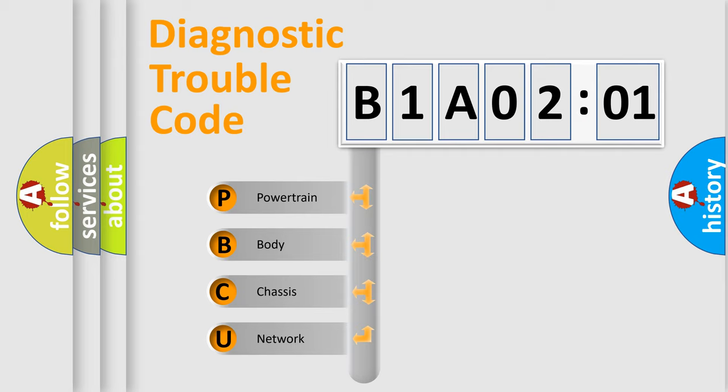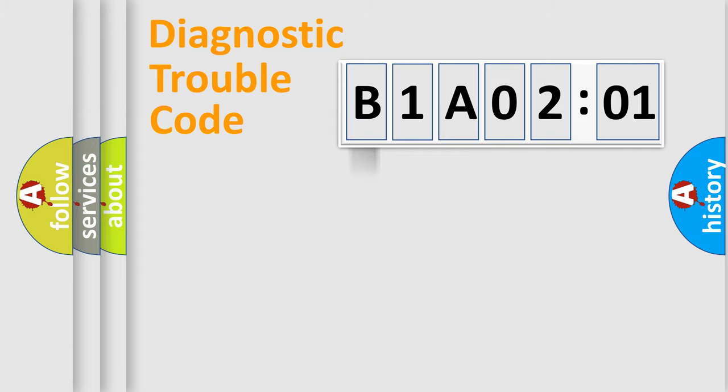We divide the electric system of automobile into four basic units: Powertrain, Body, Chassis, and Network. This distribution is defined in the first character code.